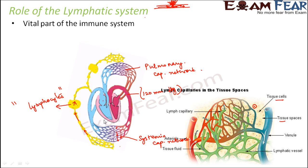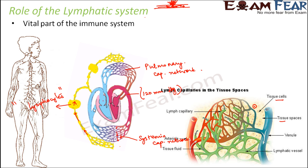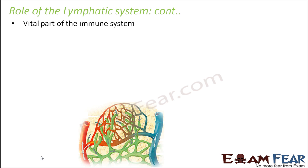So now you understand the importance of the lymphatic system. It helps the immune system by purifying the lymph and fighting infection. It removes all the extra fluid between the tissue cells so there is no swelling. It also supplies fresh plasma — purified at the lymph nodes — and some proteins back to the blood. The lymph nodes are located at several different portions of the body.